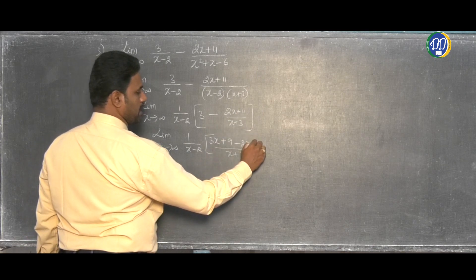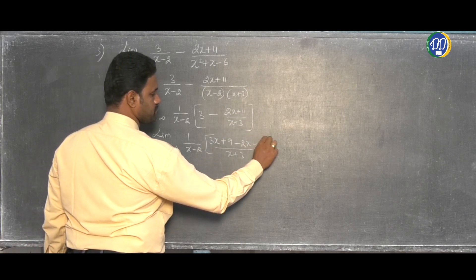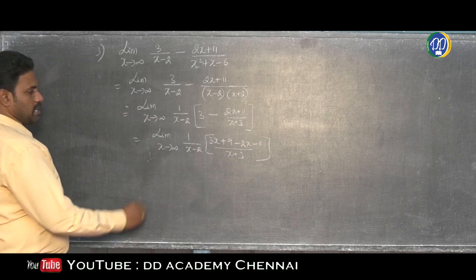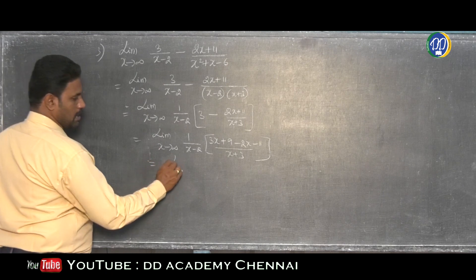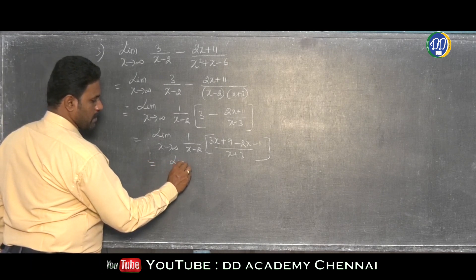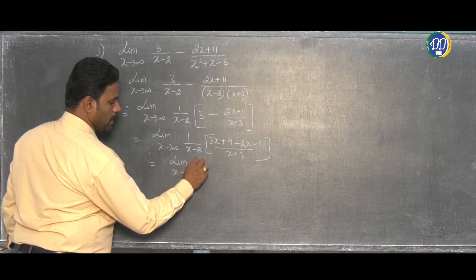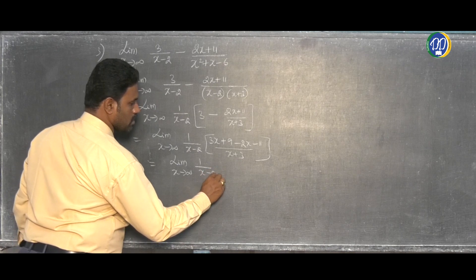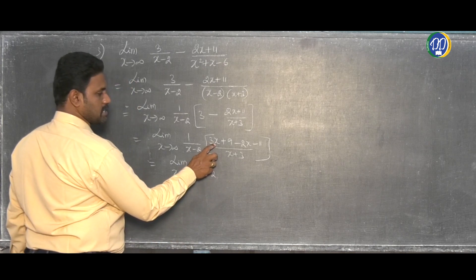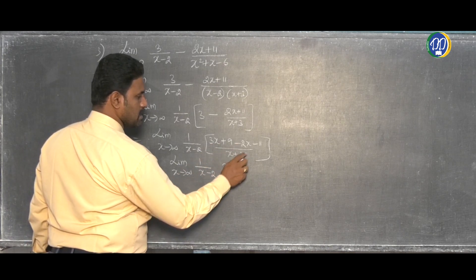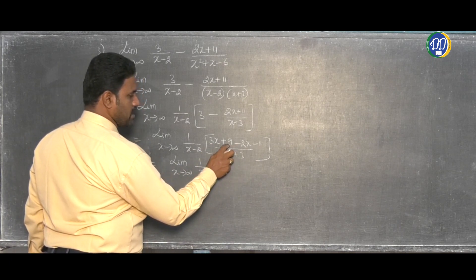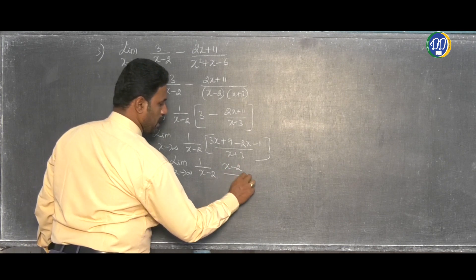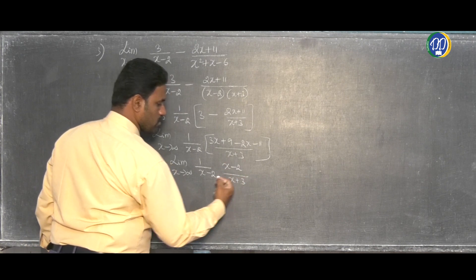That means minus 11. So limit x tends to infinity of 1 by (x minus 2). In the numerator: 3x minus 2x is x; minus 11 plus 2 is minus 9. So the expression becomes limit x tends to infinity of (x minus 9) by (x plus 3).